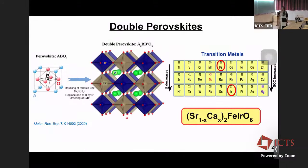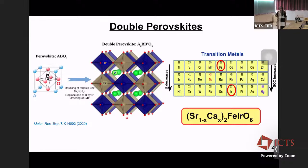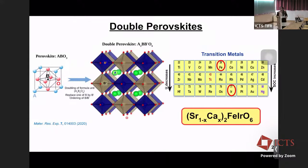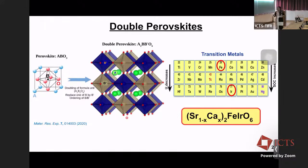The motivation behind having iron and iridium at the two sites was that iron is a 3D element with strong electronic correlation, and iridium is a 5D element with strong spin-orbit coupling strength lambda. By having these two in one system, we were interested in understanding the interplay between these two energy scales, and at the same time we wanted to look into the evolution of magnetism by doping at the non-magnetic sites — strontium and calcium.